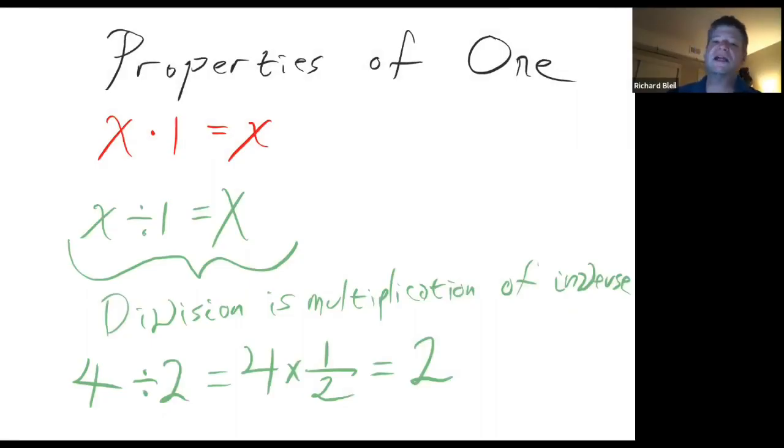We will find that the factor label method is based on properties of the number 1. If you take any number, 4, and multiply it by 1, you're going to get the exact same number back. 4 times 1 is 4.